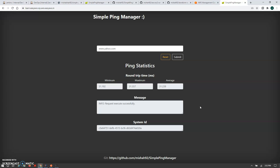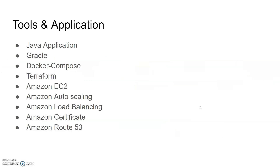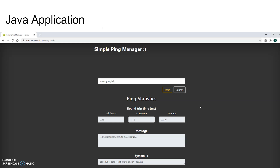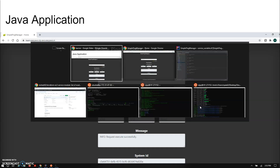This application is deployed through Terraform, which creates resources using Terraform scripts. The application is created using a Java-based microservice. On the tools and application side, we used: a Java-based application, Gradle for compilation, Docker Compose for building and running Docker on EC2, and Terraform for creating the complete infrastructure on AWS. On the AWS side, we used EC2, Auto Scaling Group, Load Balancing, ACM, and Route 53.